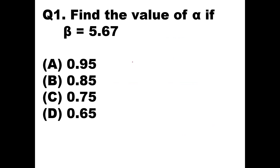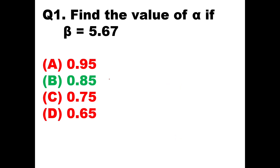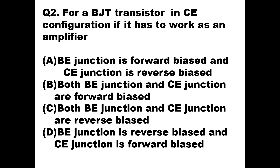The formula is alpha = beta / (1 + beta). So alpha = 5.67 / (1 + 5.67) = 5.67 / 6.67 = 0.85. The value of alpha is 0.85, so option B is the right answer.